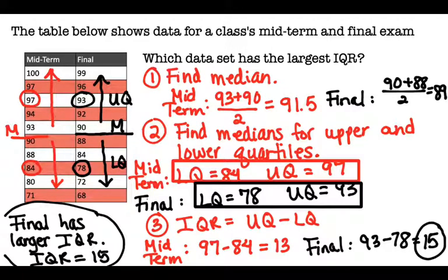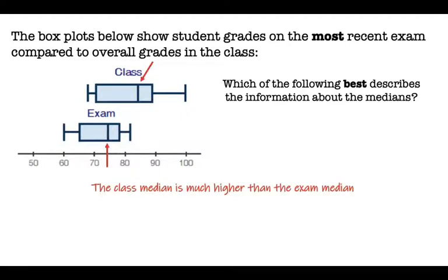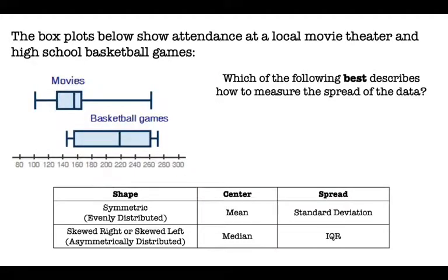Number two shows box plots of students' grades on recent exams compared to overall class grades. The question asks which best describes the information about the medians — those are the lines in the middle of the rectangles. The class median is approximately 84 and the exam median is approximately 74. So the class median is higher than the exam median, or equivalently, the exam median is lower than the class median — check how the answer is phrased.